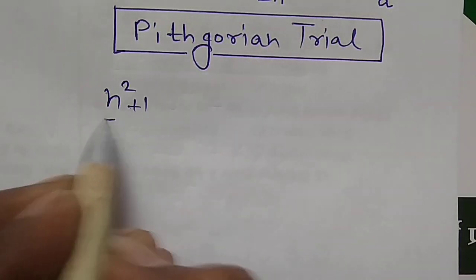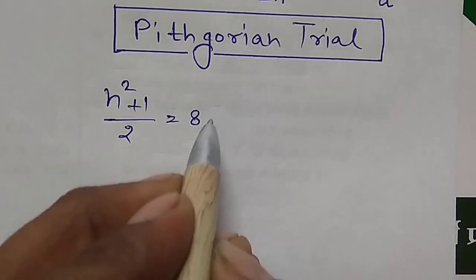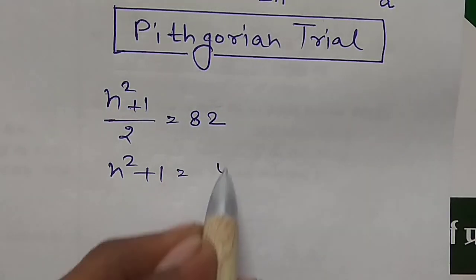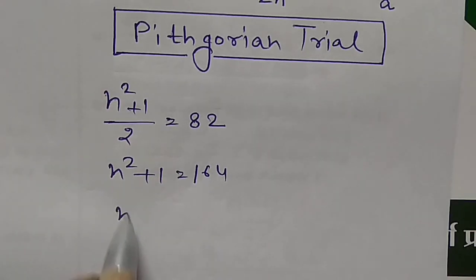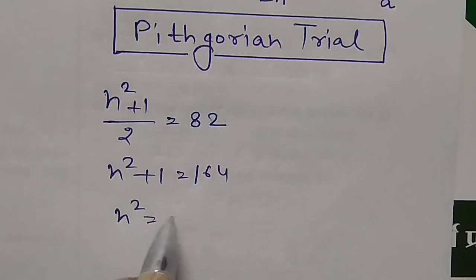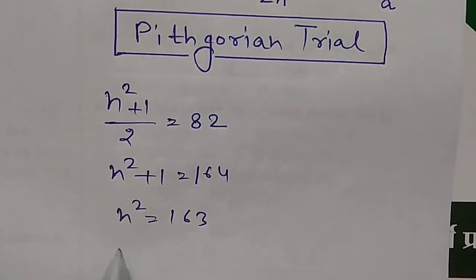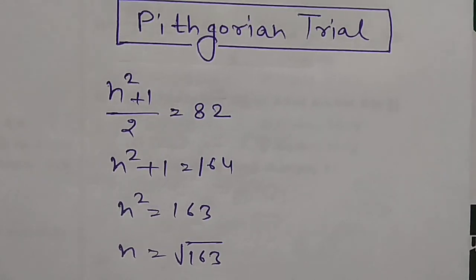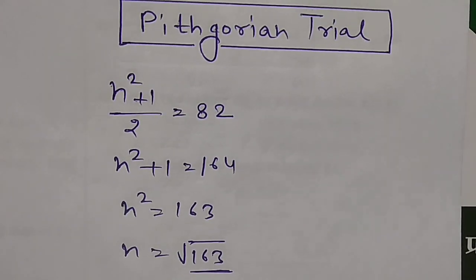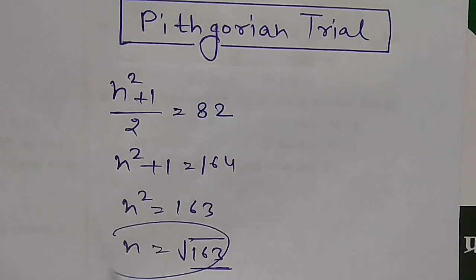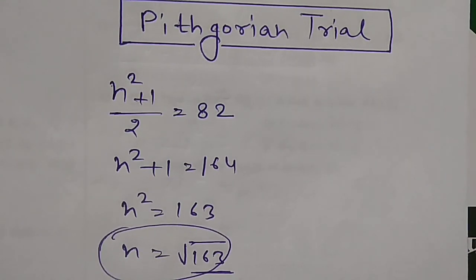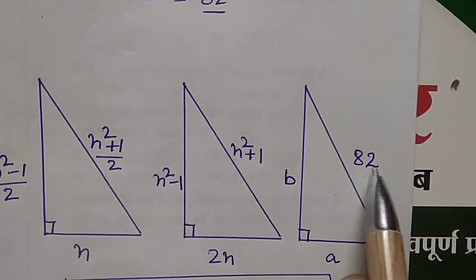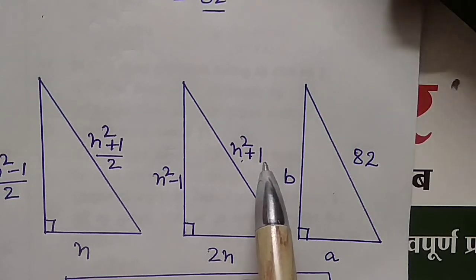Setting (n² + 1)/2 = 82 gives n² + 1 = 164, so n² = 163, meaning n = √163. Since 163 is not a perfect square, this case does not apply. Now we compare 82 with n² + 1.